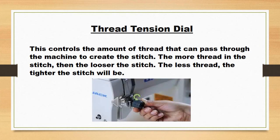Thread Tension Dial. This controls the amount of thread that can pass through the machine to create the stitch. The more thread in the stitch, the looser the stitch. The less thread, the tighter the stitch will be.